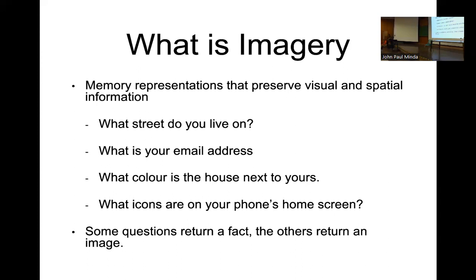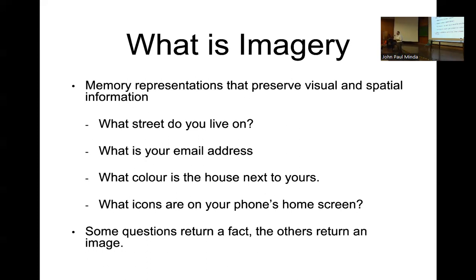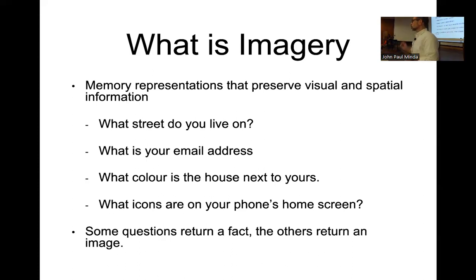This relies heavily on the visual-spatial sketchpad — that's the component of working memory that allows you to retrieve an image-based representation and interact with it in an image-based way. Not everyone has a strong sense of visual or auditory imagery. A condition called aphantasia is one in which people have the inability to create a mental image. That doesn't mean they can't interact with visual-spatial information, just that they don't have the phenomenon of visualizing something in their mind's eye. Most people do have this visual imagery system.